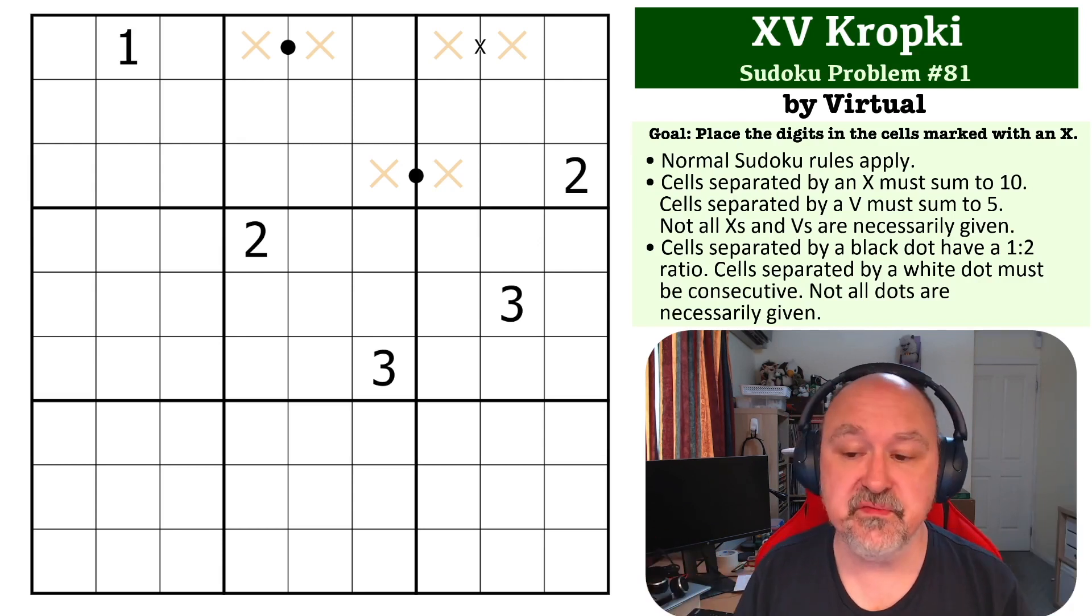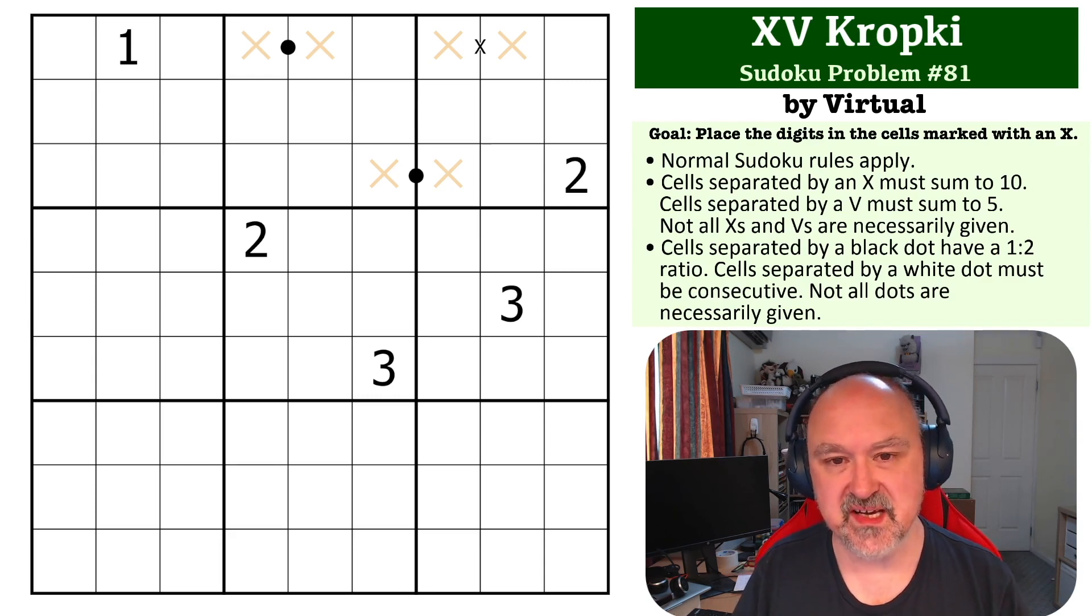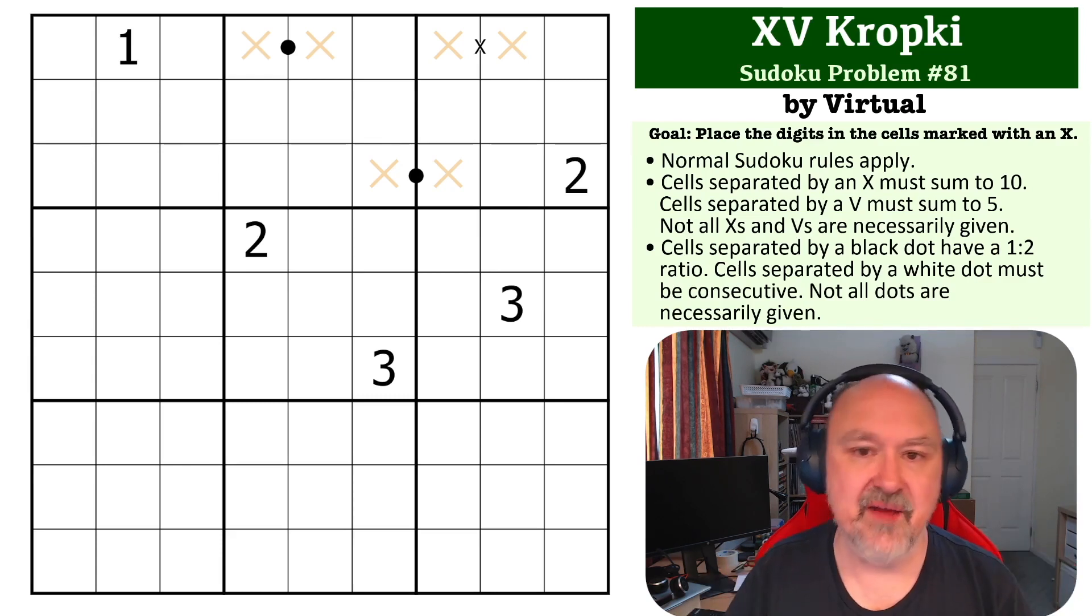There aren't any Vs in this. The Kropki is the ratio dots where cells separated by a black dot must have a 1 to 2 ratio. I've included the full Kropki rules, so cells separated by a white dot would have to be consecutive, but that's not relevant for this one. A couple of people have questioned that, so I'm not sure how I'm going to go with this one whether I keep the rule specific, but those are the XV rules.